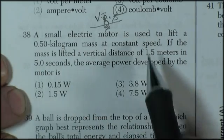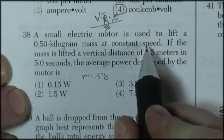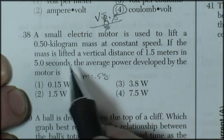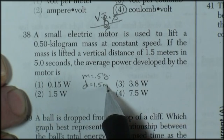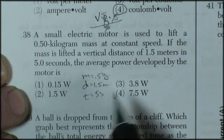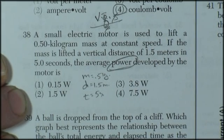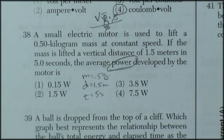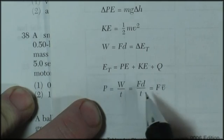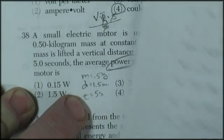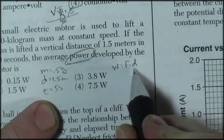Question 38. A small electric motor is used to lift a mass of 0.5 kilograms at a constant speed, so it's not accelerating. If the mass is lifted a vertical distance of 1.5 meters in a time of 5 seconds, the average power developed by the motor. Well, this looks like mechanical power. So I'm going to go to the mechanics equations. Mechanical power is work over time. Work, of course, is force times distance over time.